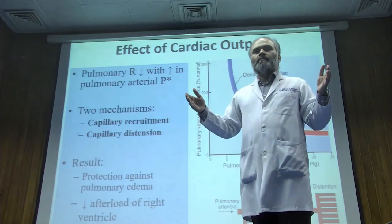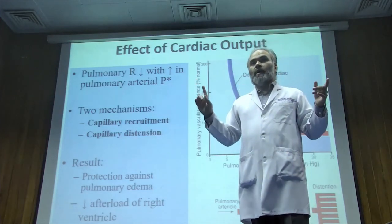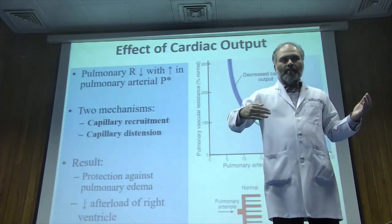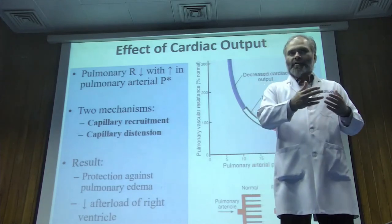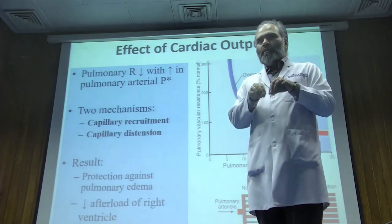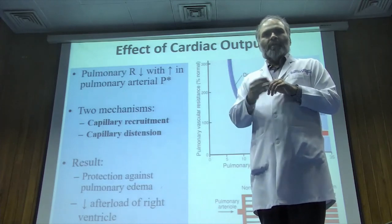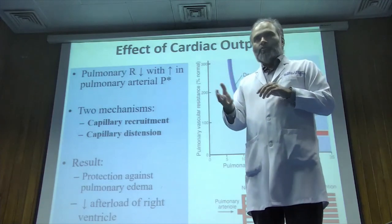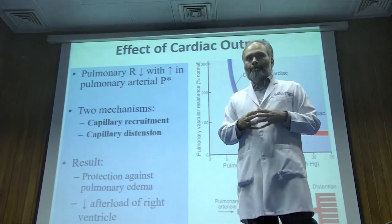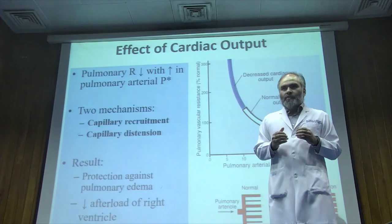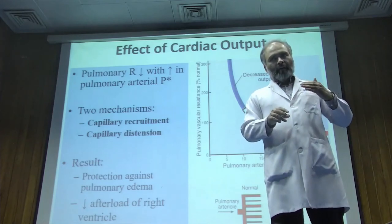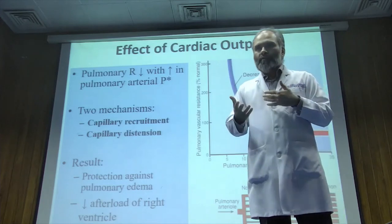If the left heart fails — for example, due to a myocardial infarction reducing left ventricular output by 25% — the right side keeps pumping blood into the lungs normally, but the left ventricle can't move it forwards. Blood pools, back pressure rises in the lung, and pulmonary edema ensues. The pulmonary vasculature's normal protective mechanisms have limits, and left heart failure can overwhelm them.